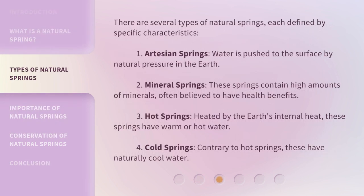There are several types of natural springs, each defined by specific characteristics. First, Artesian Springs: water is pushed to the surface by natural pressure in the Earth. Second, Mineral Springs: these springs contain high amounts of minerals, often believed to have health benefits. Third, Hot Springs: heated by the Earth's internal heat, these springs have warm or hot water. Fourth, Cold Springs: contrary to hot springs, these have naturally cool water.